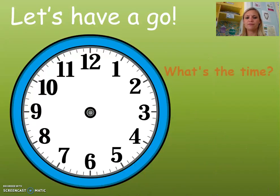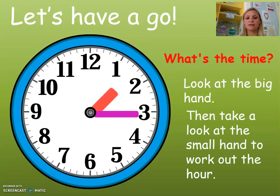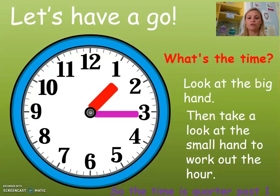Let's have another go. The big hand is on the 3, so it's quarter past. Let's look at the hour hand — it's slightly in front of the 1, so it is quarter past 1.